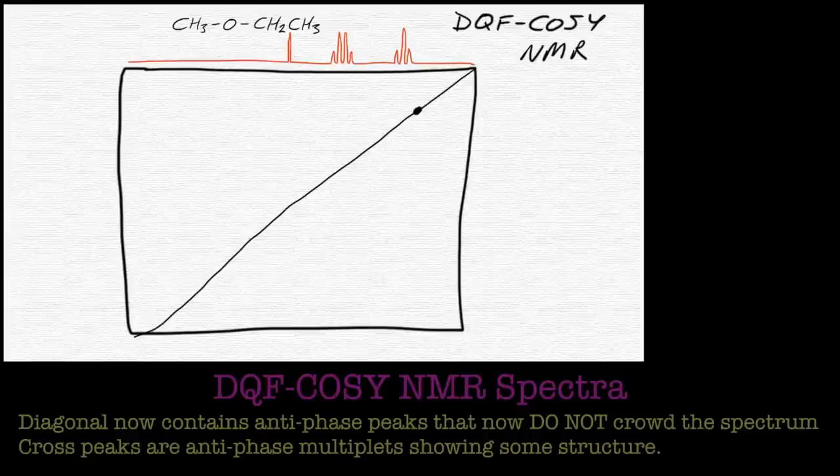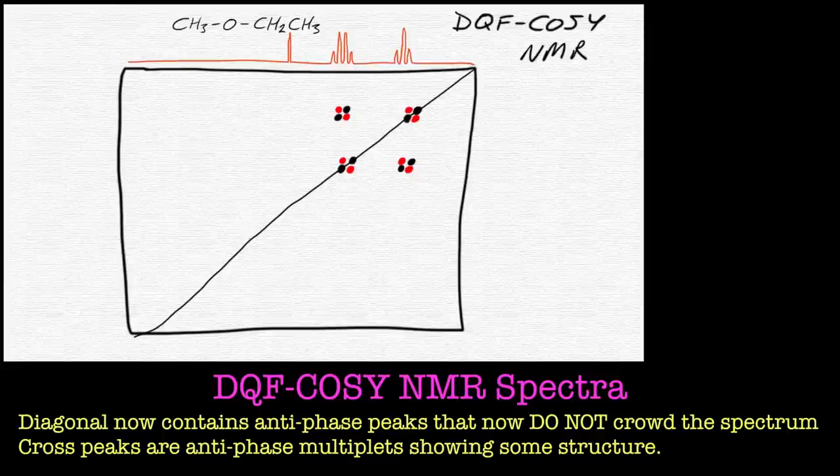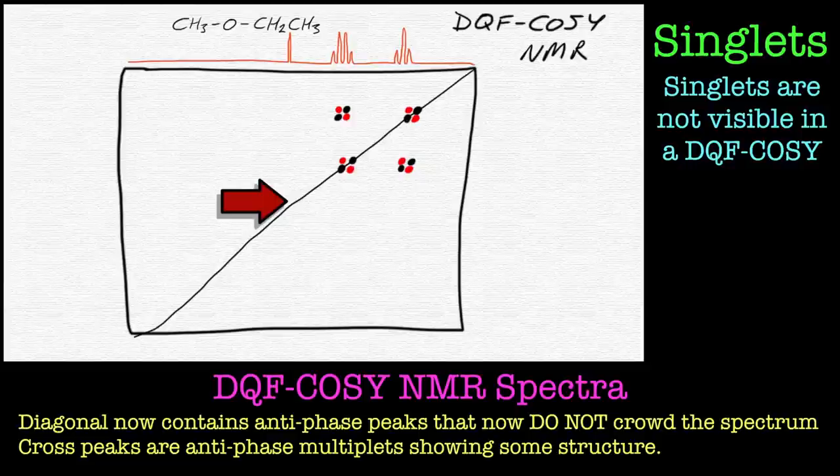Now what we see in the DQF COSY is that both the diagonal peaks and the cross peaks are now showing this anti-phase square array, and this dramatically cleans up the spectrum. Also notice that the diagonal peak from the singlet for that methyl, the terminal methyl there, has disappeared.